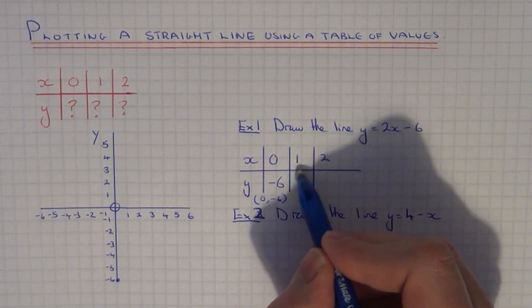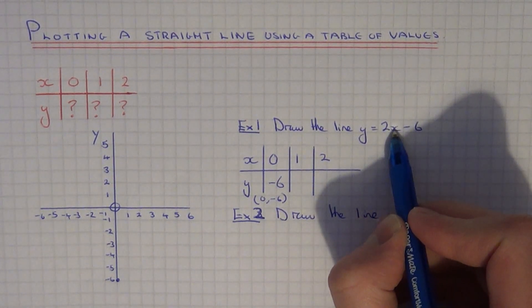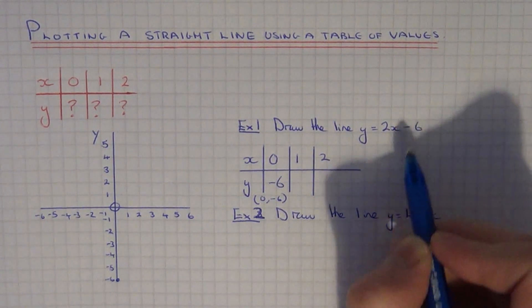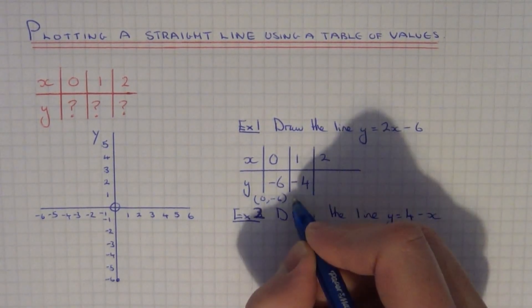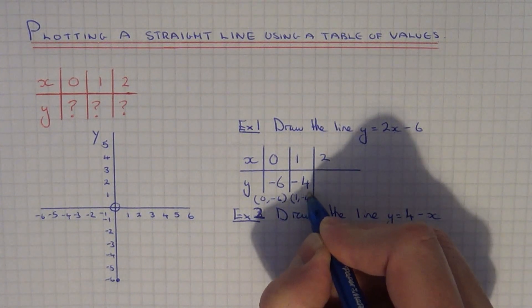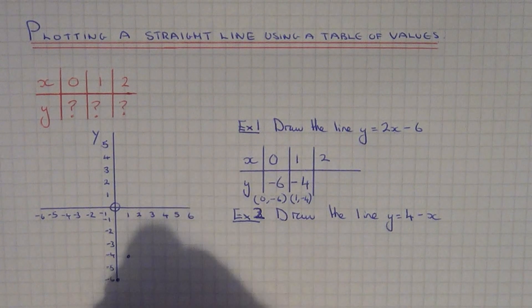Next, substitute x equals 1. So sub it in, we get 2 times 1 is 2, take away 6 will give us minus 4. So our next point is 1, minus 4. So if we plot this onto our coordinate grid.